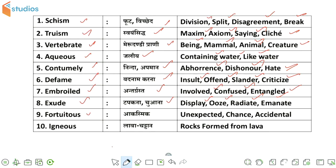Next we have, this is fortuitous, जिसकी meaning होती है आकस्मिक. इसके synonyms हैं: unexpected, chance, and accidental.